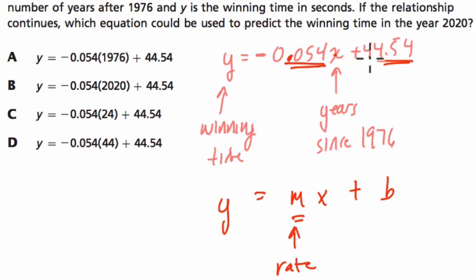And if you plug in 0 for x, what you get is 44.54, right? Anything times 0 cancels out. So in 1976, this must have been the winning time, 44.54.